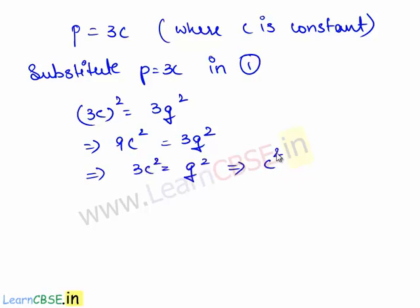This implies c square is equal to q square by 3. From this expression we see that 3 divides q square which also implies that 3 divides q. Therefore, 3 is also a factor of q.